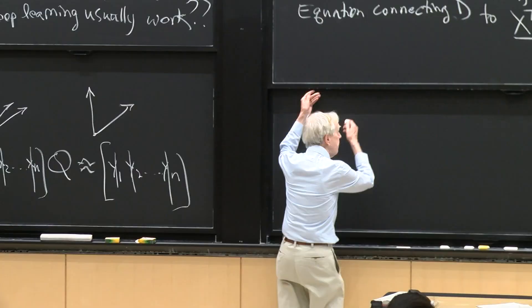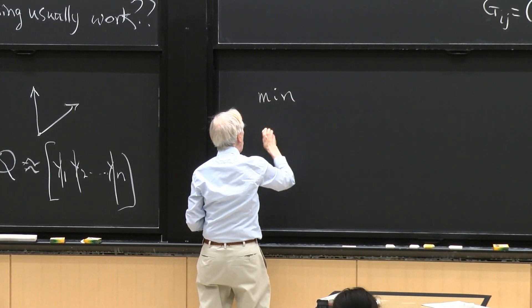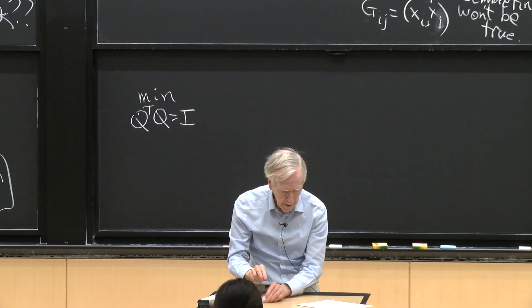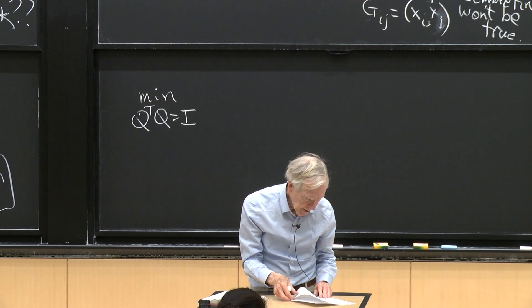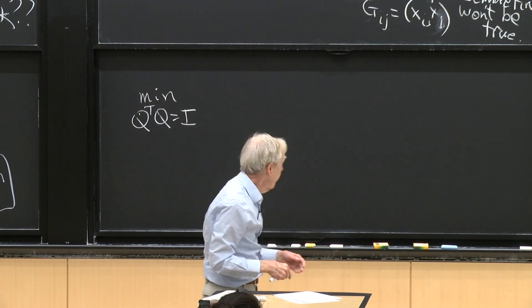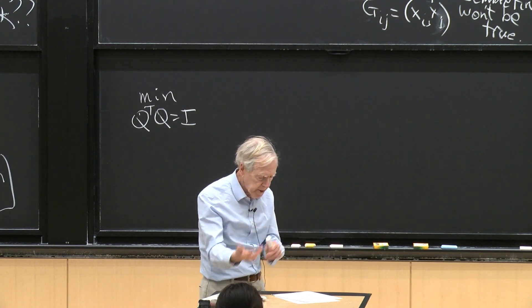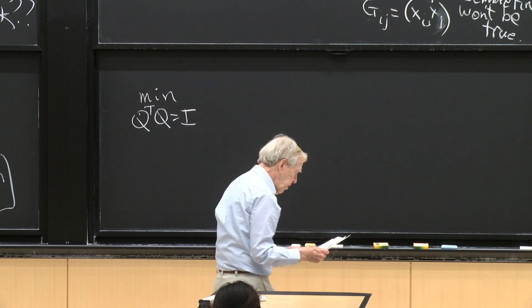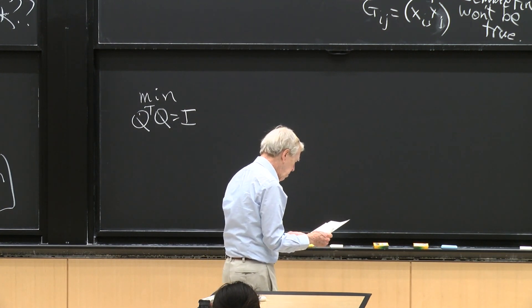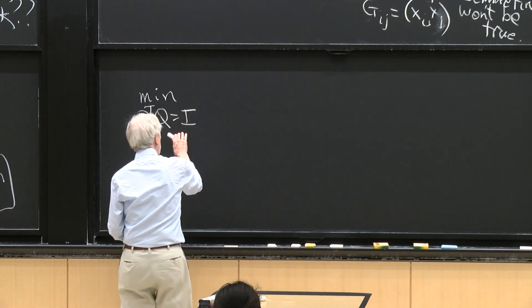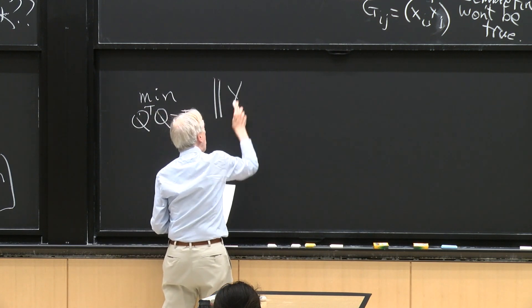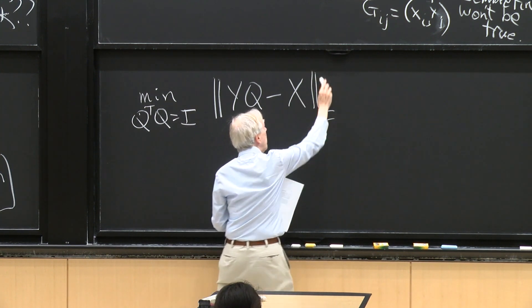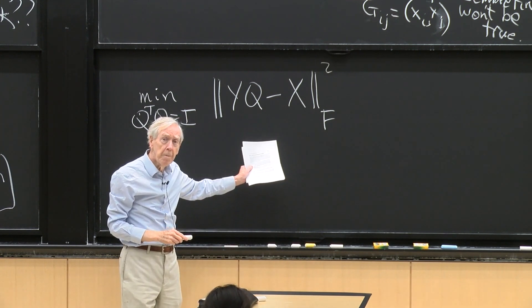So that's the problem then, minimize over orthogonal matrices Q. What orthogonal matrix Q multiplies the y's to come as close as possible to the x's? So over all orthogonal Q's, I want to minimize yQ minus x in the Frobenius norm. And I might as well square it.